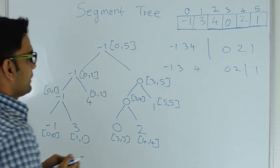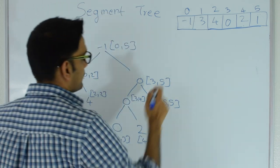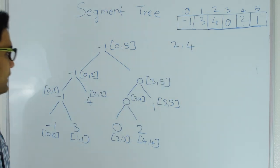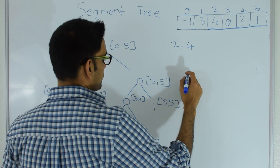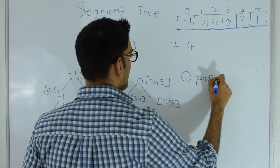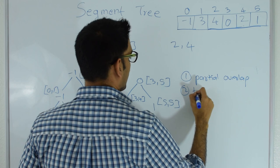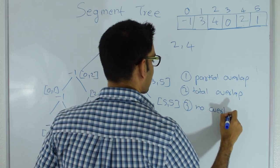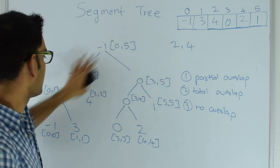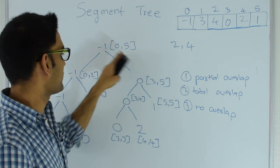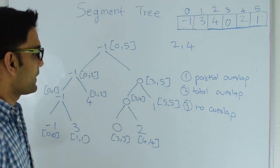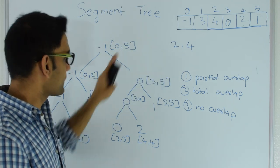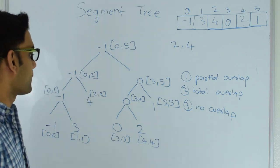Now let's do a range query on this tree. There are 3 rules to apply: first, partial overlap — when the query interval partially overlaps a node's interval, we look in both directions. Second, total overlap — if the query interval totally contains the node's interval, we stop and return the value at that node. Third, no overlap — if there is no overlap at all, we also stop and return a really big number.